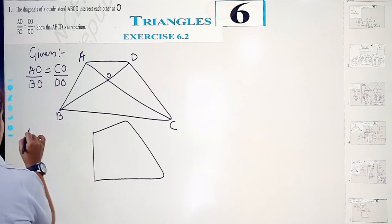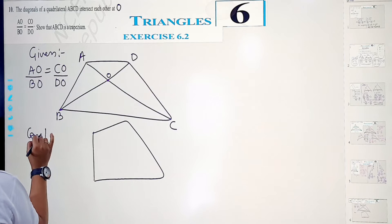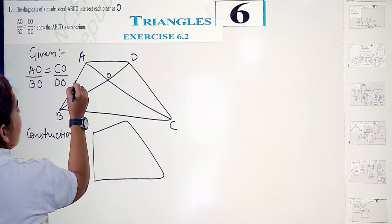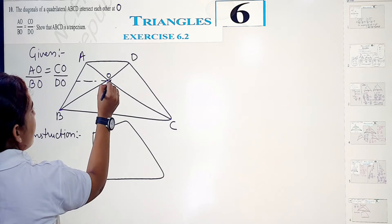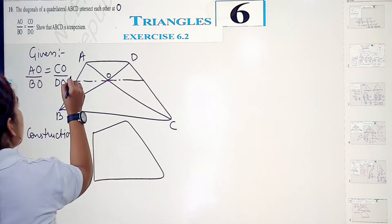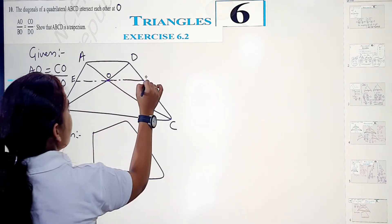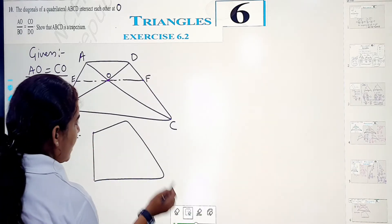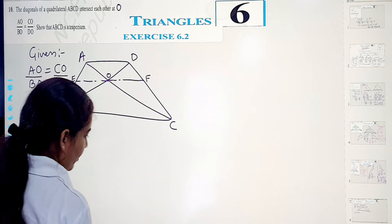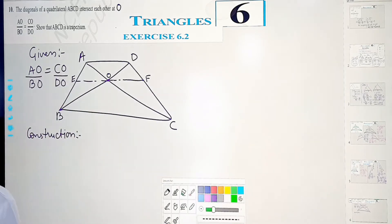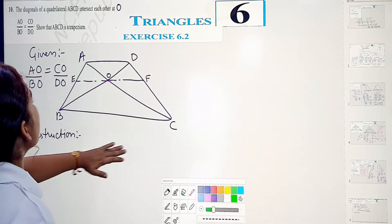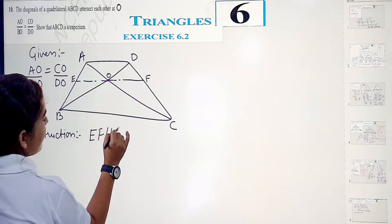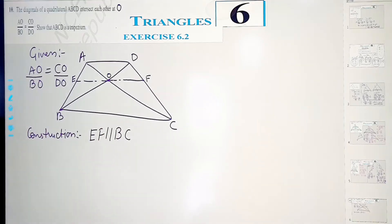Now I am doing a construction. In the construction, I need a parallel line that is parallel to BC. Let's name it E and F. So EF is parallel to BC — EF is parallel to BC.